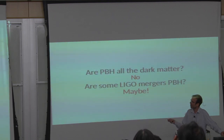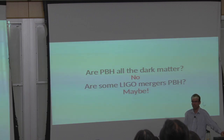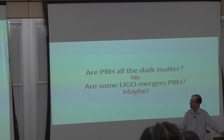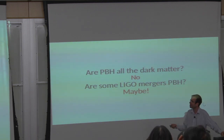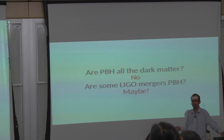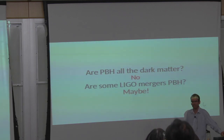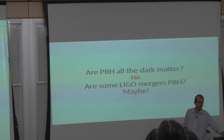I kind of expected that by now LIGO would have published its mass function looking like a power law and we would have ruled out a primordial population. But what happened is they published their mass function and it agreed quite well with being a Gaussian. So the answer is: are primordial black holes all the dark matter? No. Are some of the LIGO mergers primordial rather than stellar? A solid maybe — when I expected the answer to be no. I'm pretty pleased with this. Thank you very much for listening.